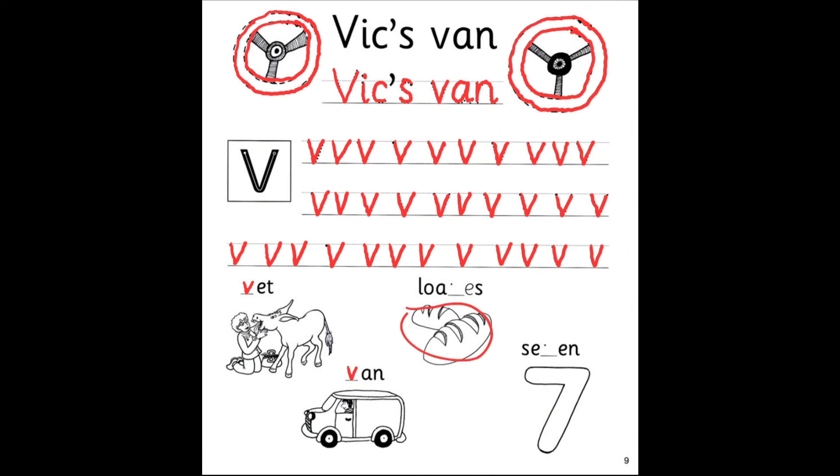What are these? Loaves, loaves, loaves of bread. What number is this? Seven, seven.